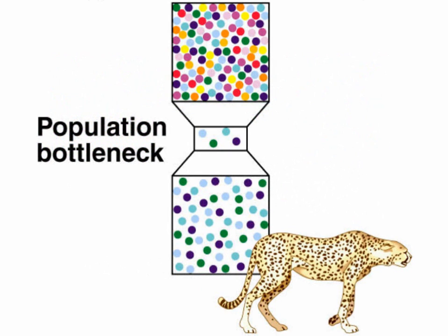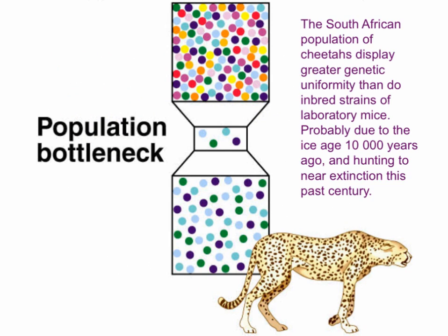The bottleneck effect: the allele distribution of years ago was quite diversified, but if an animal is hunted to near extinction, it is up to those remaining individuals — such as cheetahs — to repopulate the species. The allelic richness that made up the ancestral population is permanently lost.